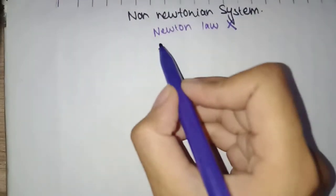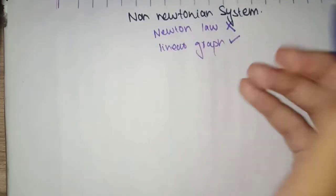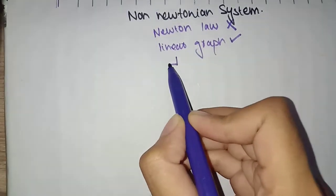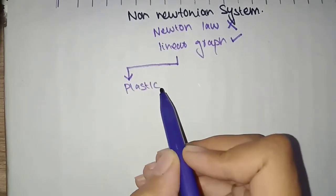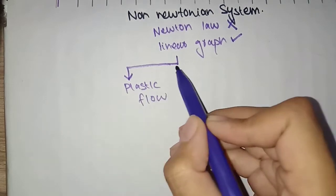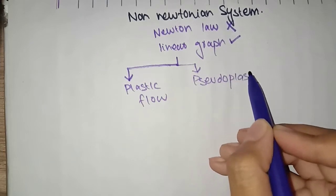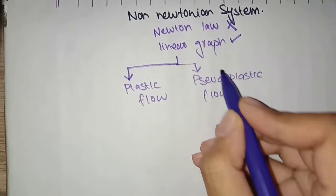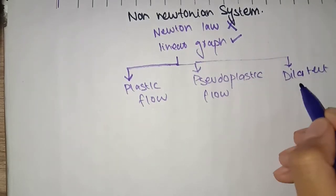There is also a case where we have a linear graph but it doesn't follow Newton's law. In this video, we have three divisions and in those three, we don't have a linear graph. The types are: plastic flow, pseudo-plastic flow, and dilatant flow.